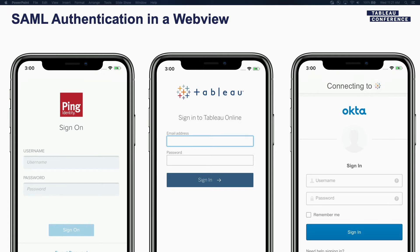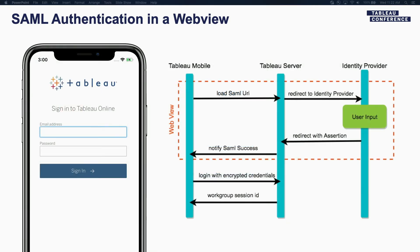I'd like to draw your attention to the screenshots again. If you'd notice, this is a webpage provided by the IDP. So the user would type in credentials directly into the webpage. There's an embedded web view within the mobile app, so the user is not typing credentials in the mobile app. So what happens in the SAML workflow? There's an embedded webpage where the IDP presents a prompt for the username and password. When we connect to Tableau server, everything that happens inside the box is in the web view. The user would type in credentials directly in the webpage, and if the credentials check out, the IDP would redirect back with an assertion. The assertion is what we look for in the mobile app, and when we get this from the IDP, we are able to log into Tableau and get the work group session ID.